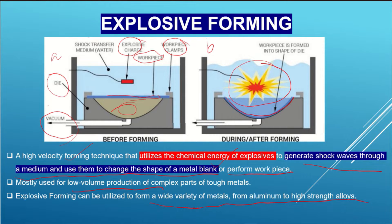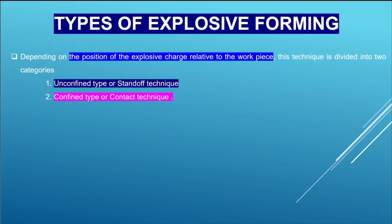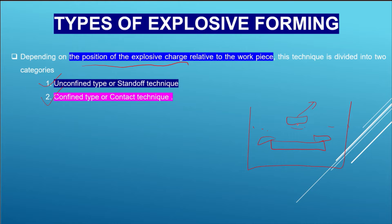If you are using a figure, explain explosive forming and its different types. The classification of explosive forming is based on the position of the explosive charge. There are two types: first, unconfined type or standoff technique; second, confined type or contact technique.